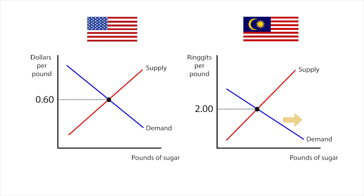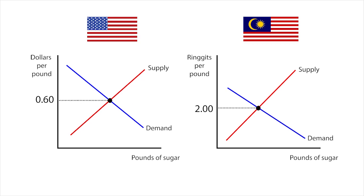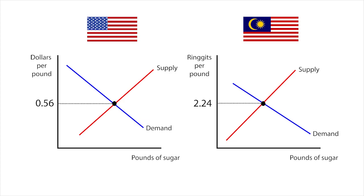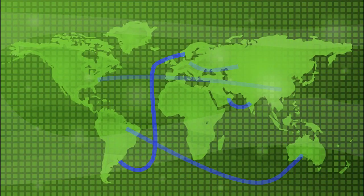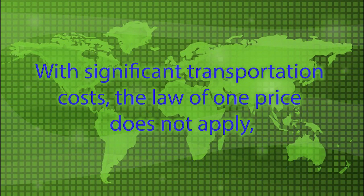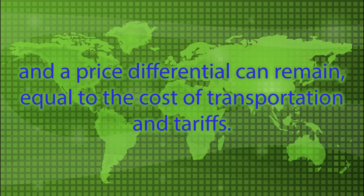That buying and selling would increase the demand for sugar in Malaysia and increase the supply of sugar in the United States, and arbitrage would continue until the prices of sugar in the two markets converged. However, if it is difficult or expensive to transport a good or service from one country to another, the law of one price does not apply and a price differential can remain equal to the cost of transporting the good and paying any relevant tariffs.